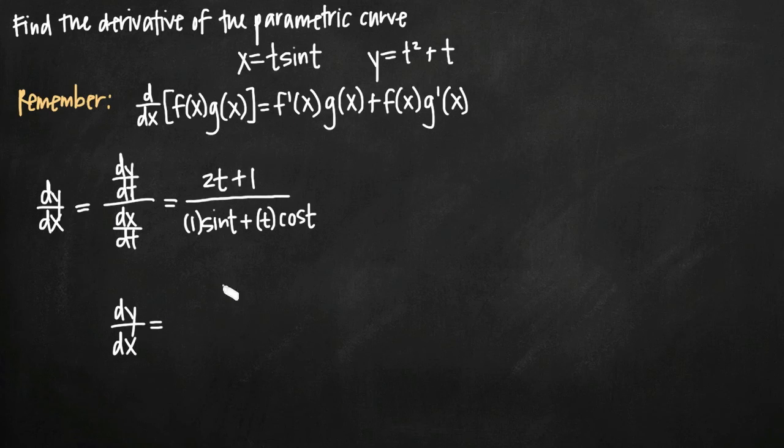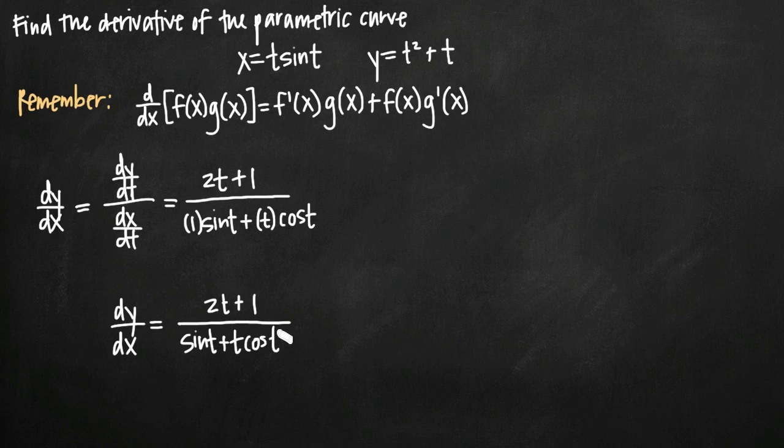is just 2t plus 1 divided by sin(t) plus t cos(t). And that's it. That's our final answer.